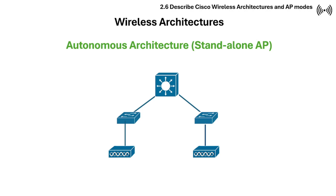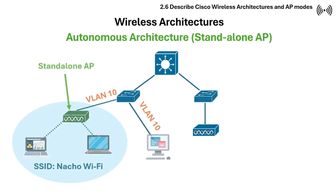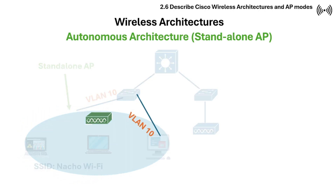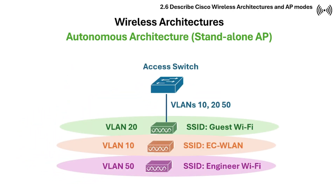Let's get started with autonomous architecture. Autonomous access point architecture in wireless networking means each access point functions independently as a standalone device that provides a fully functional wireless network. An autonomous access point can also broadcast and support multiple logical wireless networks and multiple SSIDs, and each SSID can then be mapped to a different VLAN so different users can connect to different segments of the wired network.